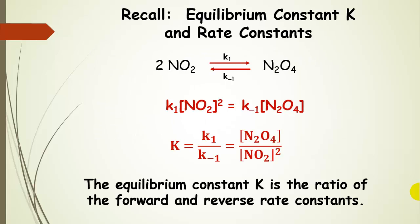Let's also remind ourselves about what the equilibrium constant really is. We derived an expression for the equilibrium constant that is the ratio of the forward rate constant divided by the reverse rate constant. We renamed that the equilibrium constant K, which is capital K.